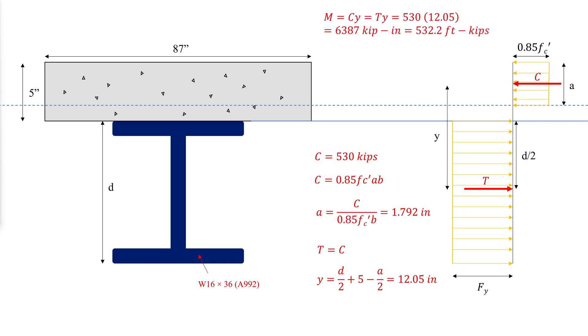The nominal strength is the moment of the couple. And for LRFD design, the design flexural strength will be 0.9 multiplied by the moment of the couple, which gives 479 foot kips.